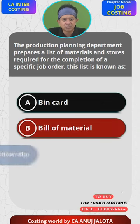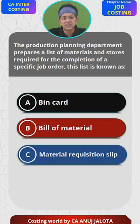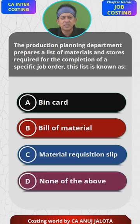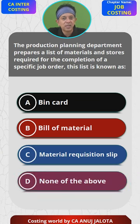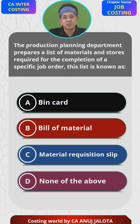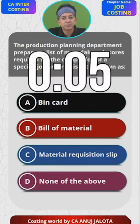Here are the four options: A is bin card, B is bill of material, C is material requisition slip, and D is none of the above. Think of the correct answer and then type it in the comments. Please pause the video right now.